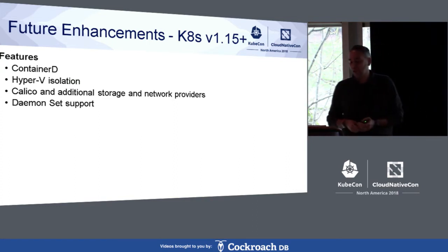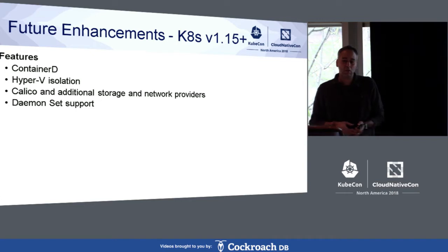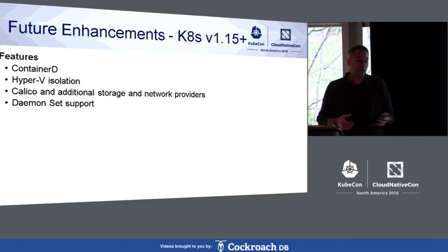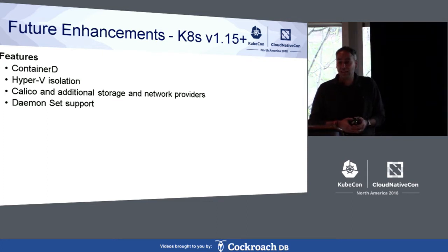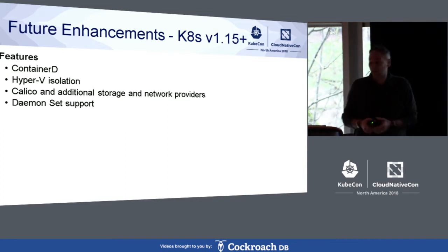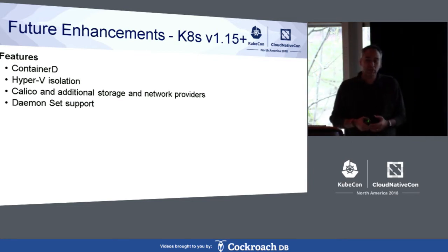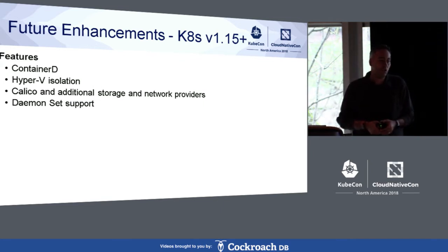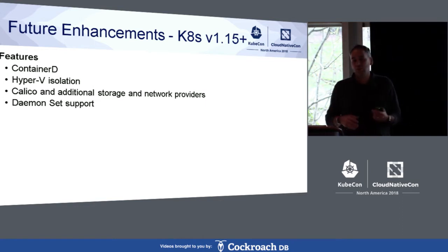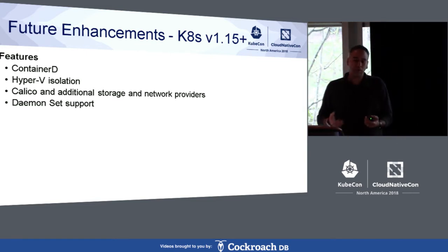Post-GA, in Kubernetes 1.15 and beyond — no real target timeframe since these are far out — Microsoft has been investing heavily around ContainerD and CRI implementation, which we want to see light up for Windows. Hyper-V isolated containers are something we definitely want to bring to stable GA release as well. We have partners and customers interested in Calico and other storage and network providers. And we're working to figure out how to enable daemon sets for Windows given that there's no privileged mode on Windows, which creates restrictions around host OS access.